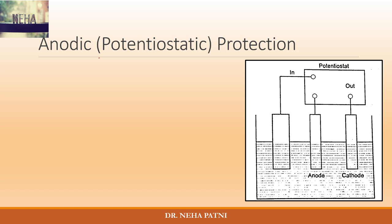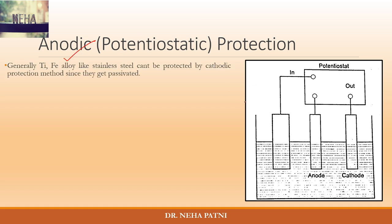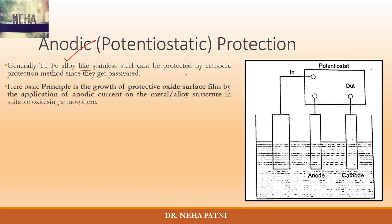The second type is anodic protection — your metal is still acting as anode. This method is applied to those materials for which you cannot apply cathodic protection, because sometimes the cathodic protection method does not work with particular types of metals, as in those cases they become passivated.